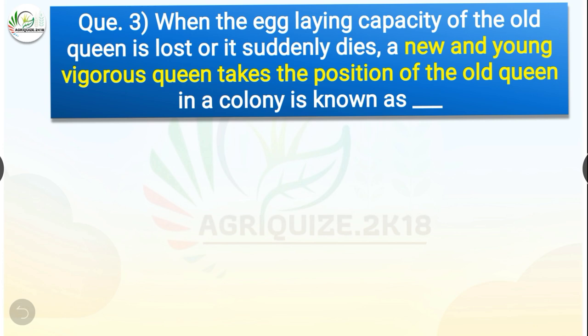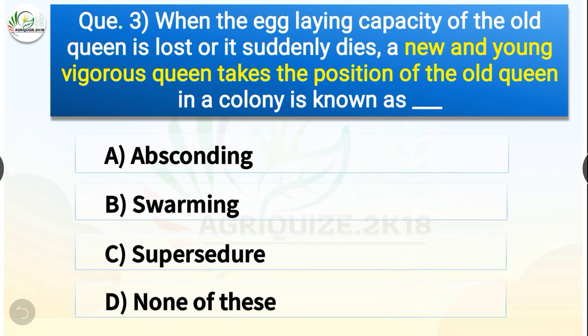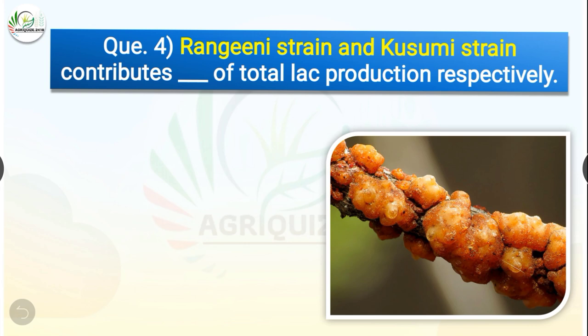Question number three: When the egglaying capacity of the old queen is lost or it suddenly dies, a new and young vigorous queen takes the position of the old queen in the colony, and it is known as dash. The options are absconding, swarming, supersedure, or none of these. The correct answer is option C — supersedure.